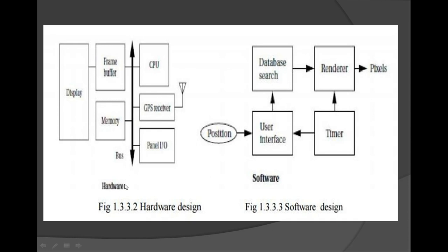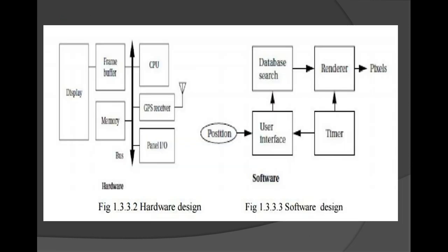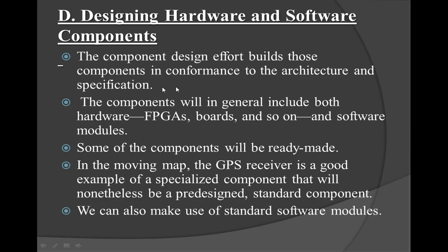Regarding cost for the GPS system, the street price — the marketable selling price — should be no more than 100 dollars. For physical size and weight, the device should fit comfortably in the palm of the hand; if the system is bulky, no one will demand it. For power consumption, the device should run for at least 8 hours on AA batteries. These are the requirements of the system.